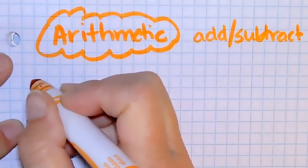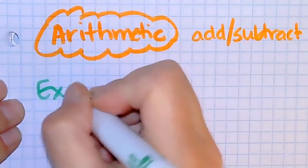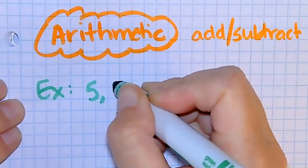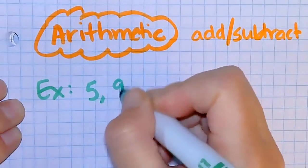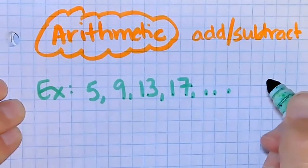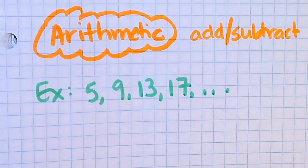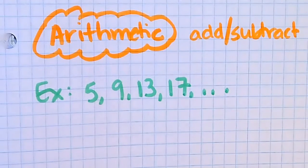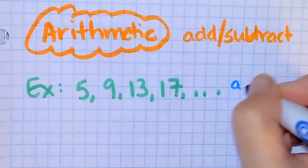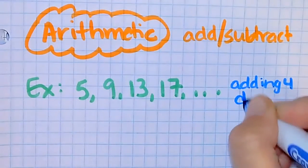So for example, let's say we have 5, 9, 13, 17, dot dot dot. When we're looking at this, we see that in this particular problem we are adding four each time. So we're adding four — that is our common difference. We call it our D.